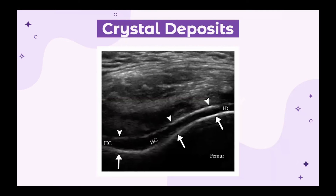Gout is the most common cause of inflammation in men and is associated with the accumulation of uric acid in the body. Ultrasound is able to detect these crystal deposits that accumulate within the joints. The double contour sign, seen through two parallel hyperechoic contours, indicates the crystal deposits. The deeper contour shows the femoral cortex, right above is the hyaline cartilage, and the more superficial hyperechoic contour represents the uric acid accumulating on the surface of the hyaline cartilage.